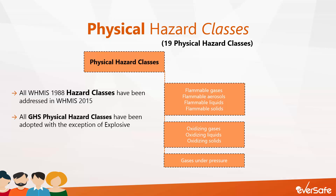Likewise, all the GHS physical hazard classes have been adopted in Canada by the HPR, except the explosive hazards class. Also, new physical hazard classes such as simple asphyxiants, pyrophoric gases, combustible dust, and physical hazards not otherwise classified have been included in WHMIS 2015 to further increase worker safety and health. We're not going to go through all the physical hazard classes in this lesson, but you can check them out by clicking the resources link in the lesson description above.